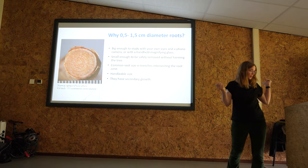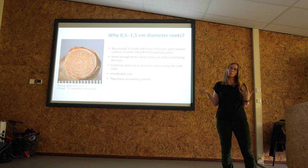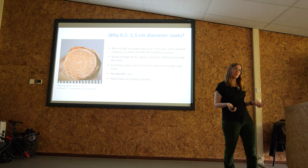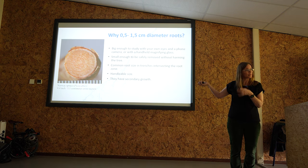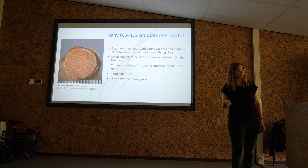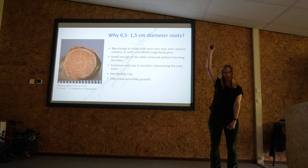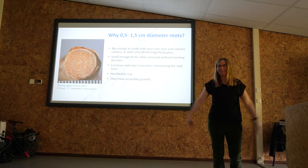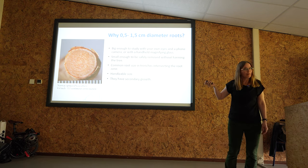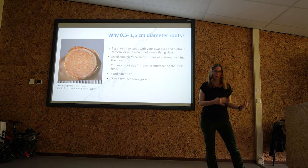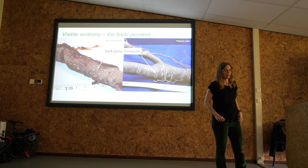They have secondary growth — when you get fatter you have secondary growth. We think they are also big enough to be removed from a tree without harming the tree, though I'll come back to that. What do we see? This is very important: visible anatomy. And here we have the first discussion, because roots actually just have bark on the finer roots.